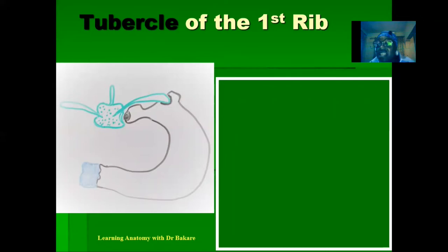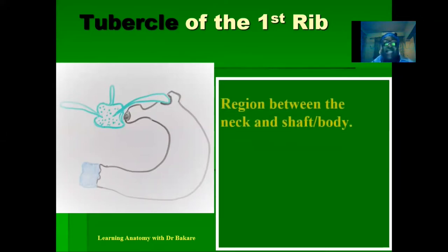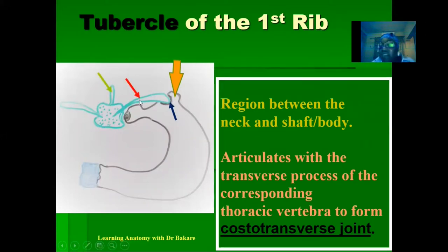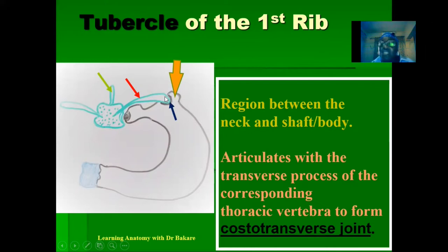After the neck, we have the tubercle, which is seen between the neck and the shaft of the body. The tubercle has a facet that articulates with the transverse process of the corresponding thoracic vertebra, forming the costal transverse joint. The transverse process of the first thoracic vertebra connects with the facet on the tubercle of the first rib, forming the costal transverse joint — the joint between the ribs and the transverse process of the corresponding thoracic vertebra.